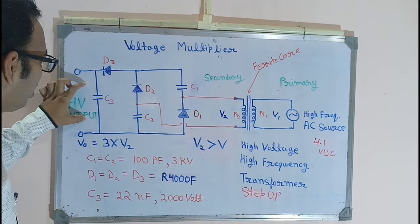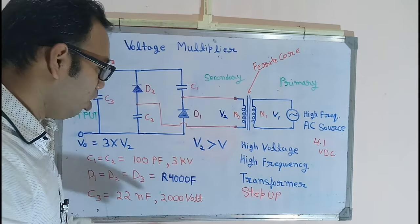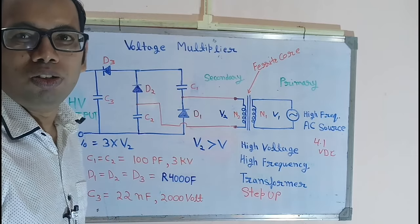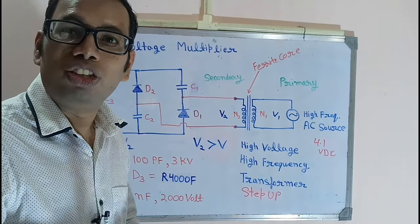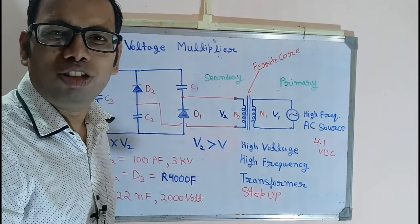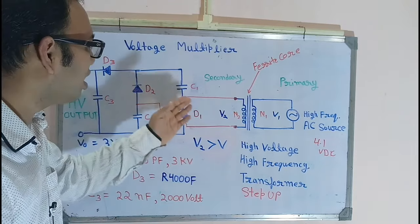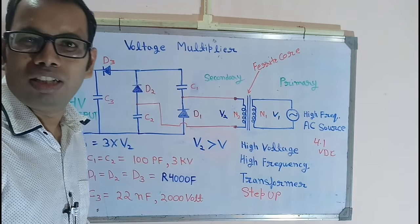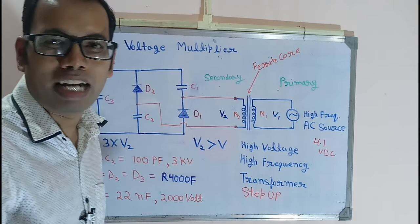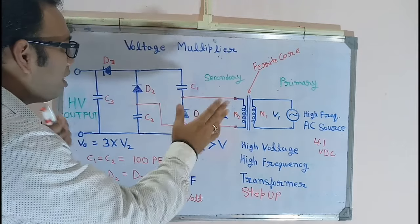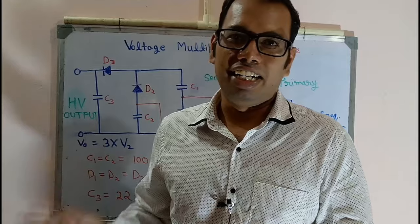The third capacitor C3 is 22 nF, rated at 2000V. Using a higher voltage rating means it won't fail quickly. Basically, mosquito bats get damaged mainly because of this — if more voltage than rated comes into the circuitry, it will damage the system capacitor and the circuitry will stop working. This is the main circuit of the high voltage generator.